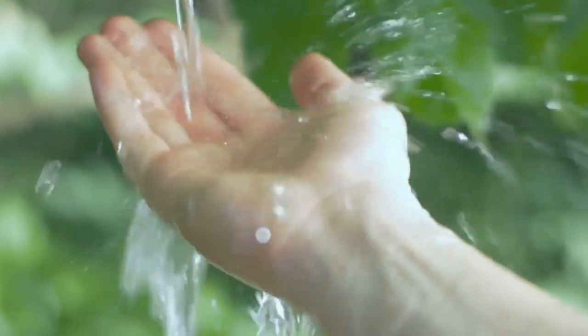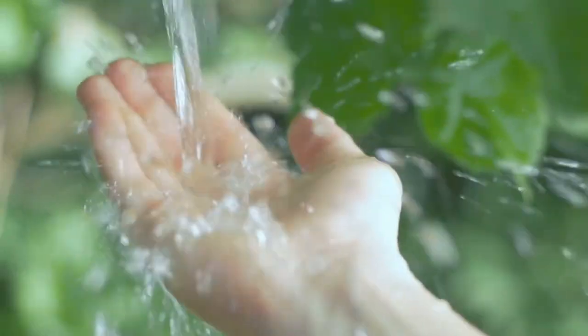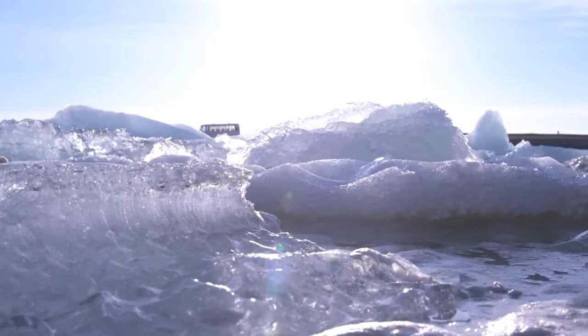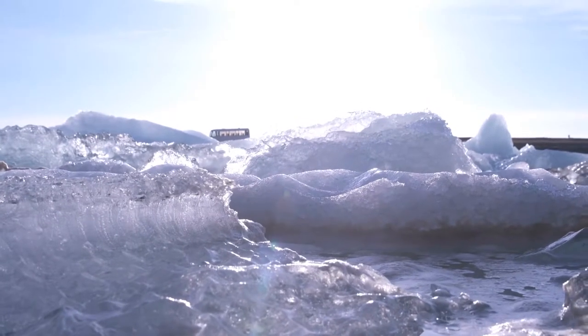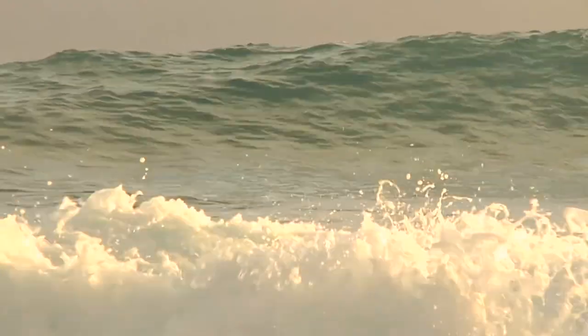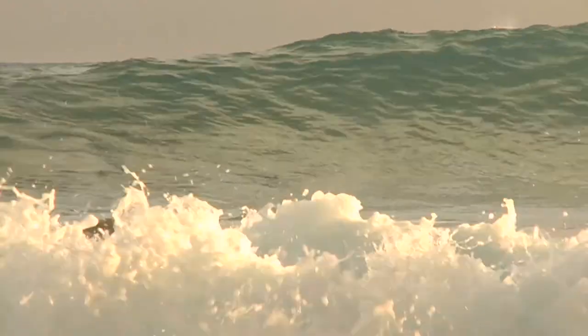The second most common form of the water molecule on our planet is ice. If all ice on the planet melted, sea level would rise by about 70 meters.